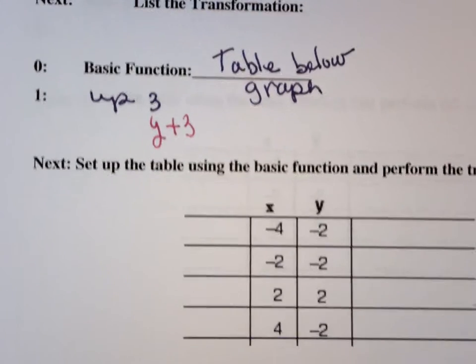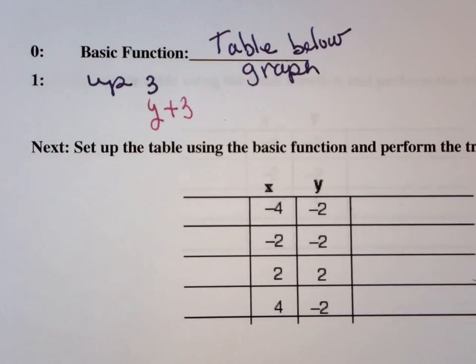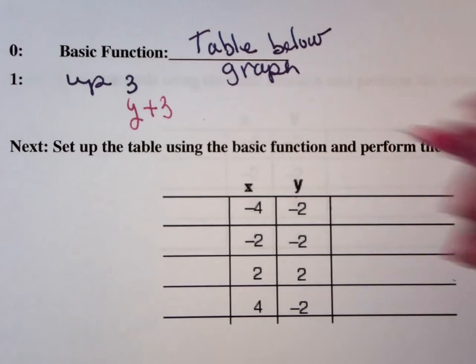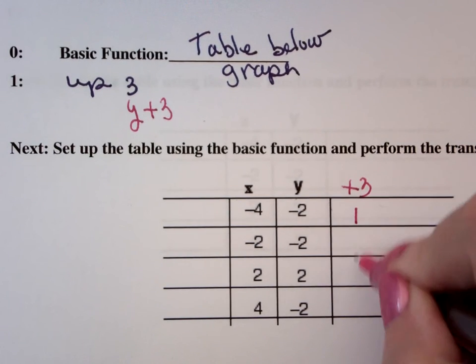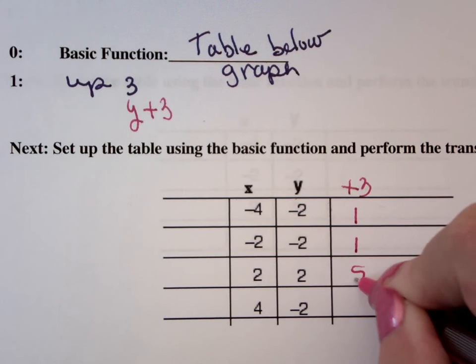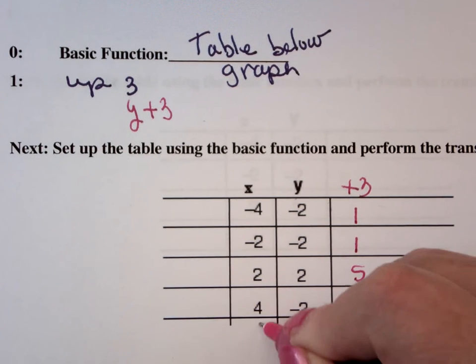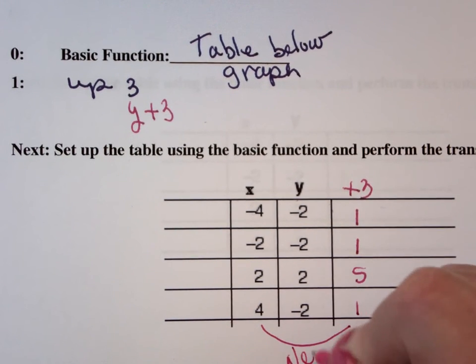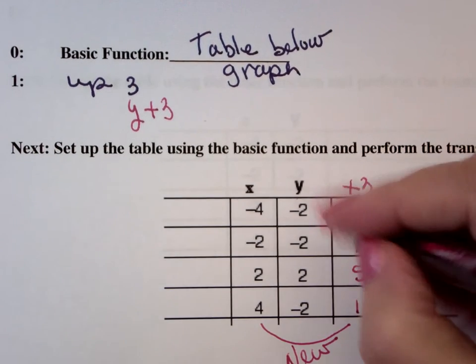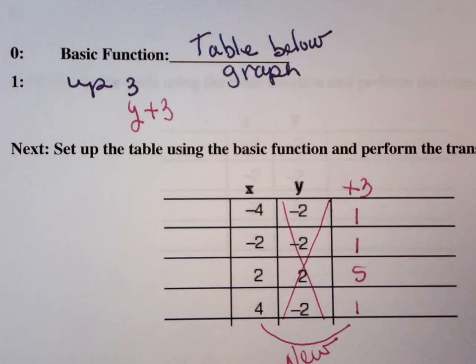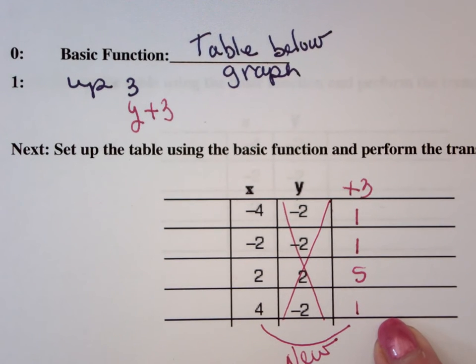So what it says to do is to add three to all the y values. So that's what I'm going to do. So this is one, one, five, one, and then that's my new set of coordinate points. So I no longer need that guy. That's my new set of coordinate points.